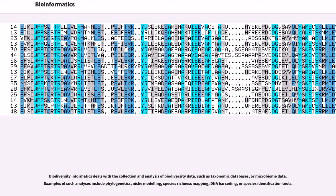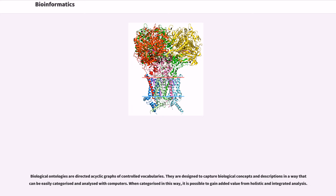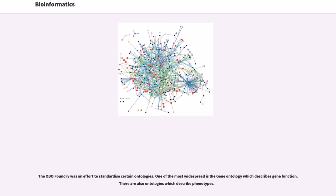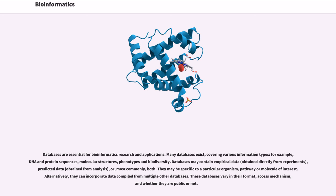Biological ontologies are directed acyclic graphs of controlled vocabularies. They are designed to capture biological concepts and descriptions in a way that can be easily categorized and analyzed with computers. When categorized in this way, it is possible to gain added value from holistic and integrated analysis. The OBO Foundry was an effort to standardize certain ontologies. One of the most widespread is the gene ontology which describes gene function. There are also ontologies which describe phenotypes.